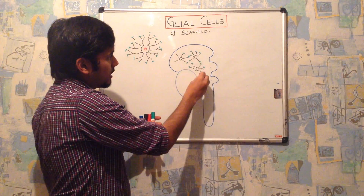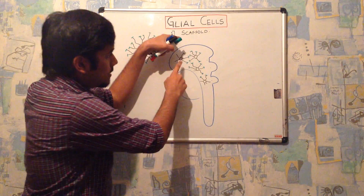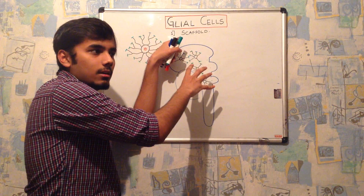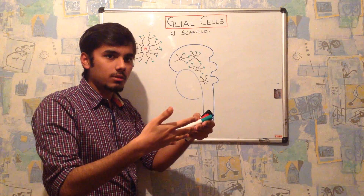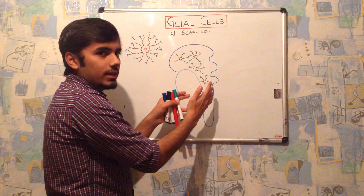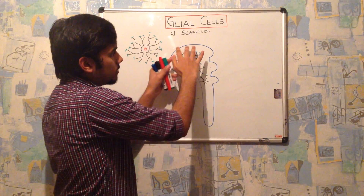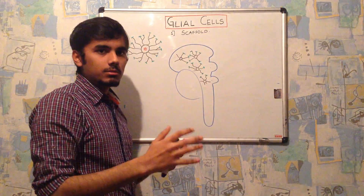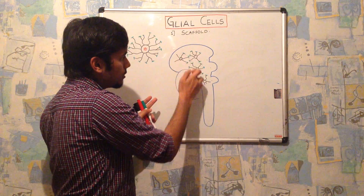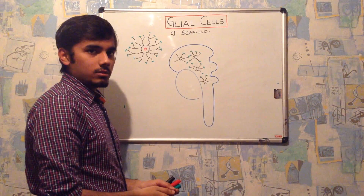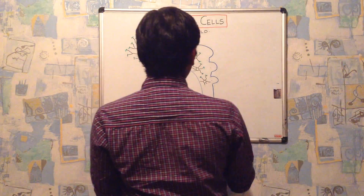Scaffold means these astrocytes, as they are many in number in the central nervous system, bind to each other with their foot processes and form a network of the entire central nervous system. The network is formed because it has to protect the central nervous system structurally — forming a structural framework by formation of these interlinked networks. This function is called scaffold.